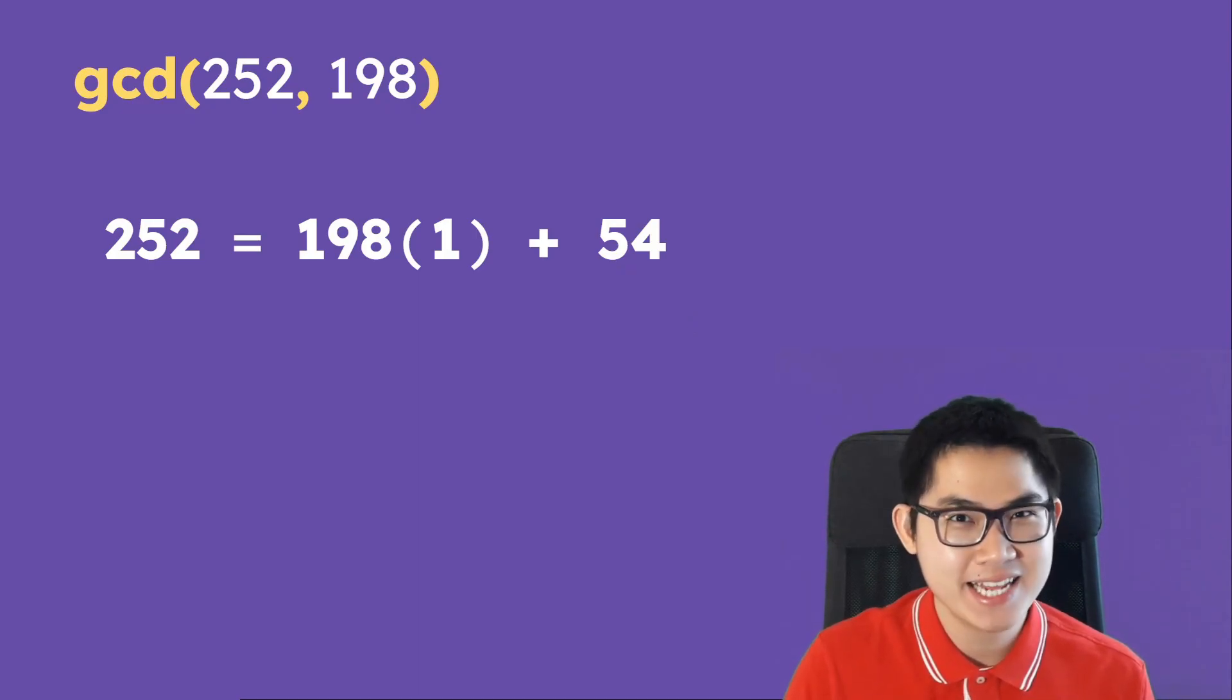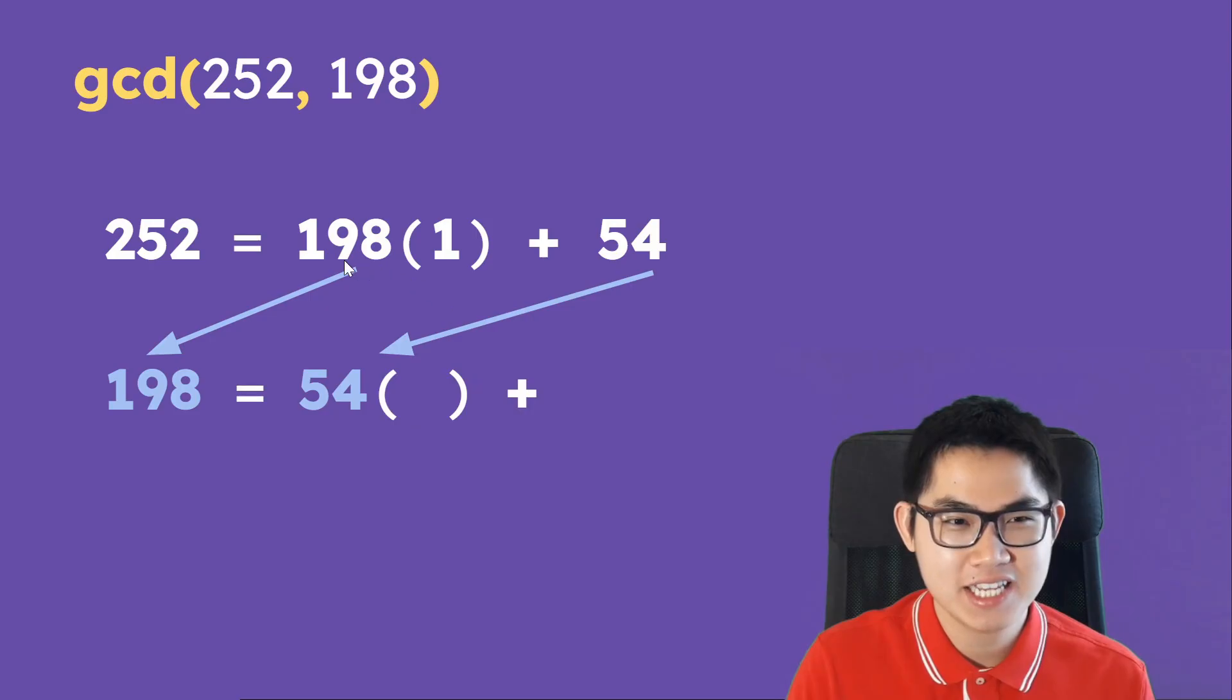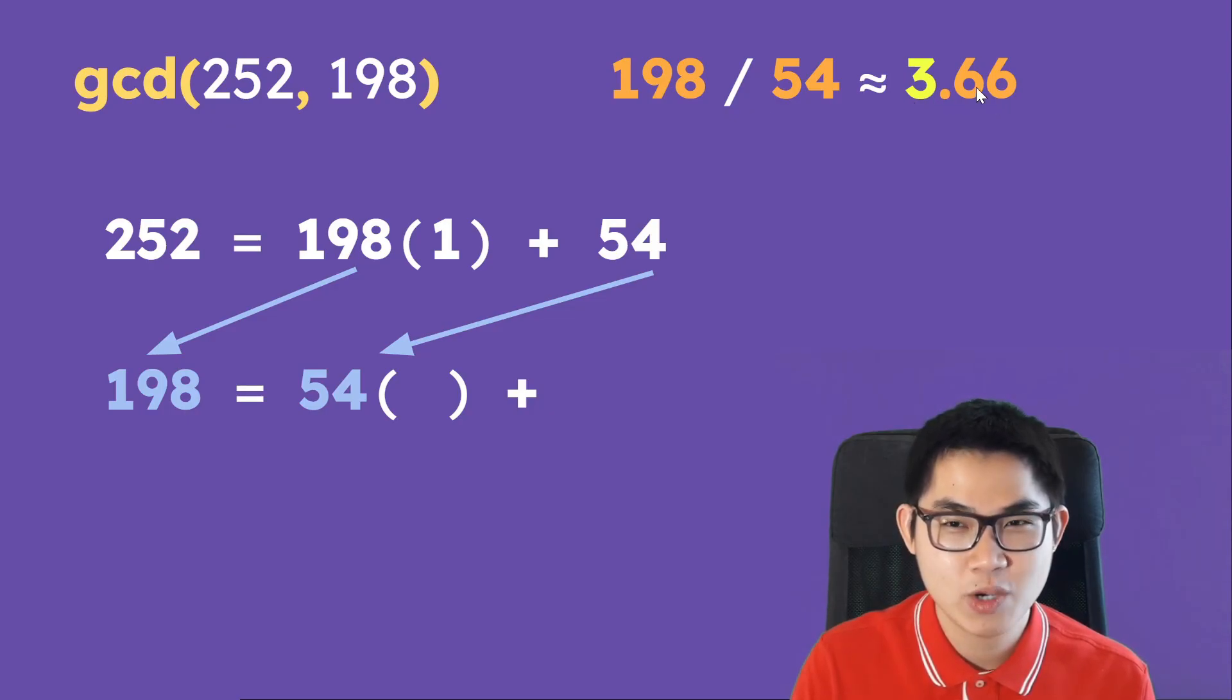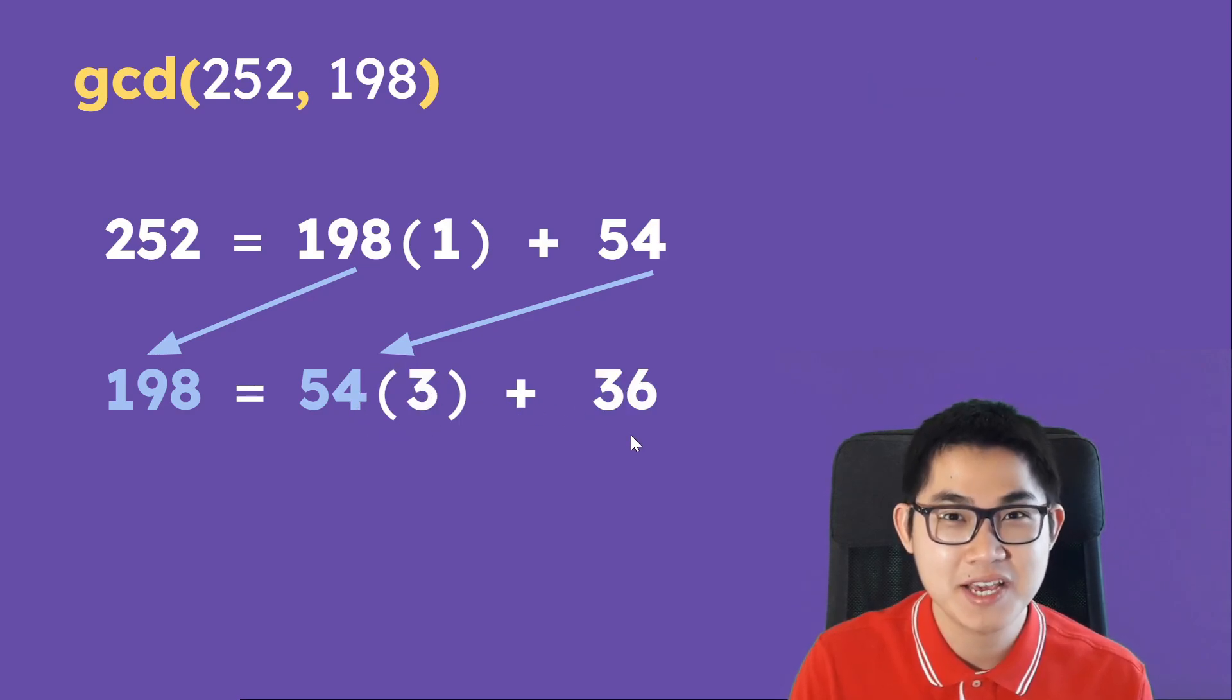We are almost done. We just have to repeat this process. So we bring the 198 down here and the 54 down here and simply repeat the process. Again, 198 divided by 54 gives us approximately 3.66. So we put the number 3 into our brackets, and then we solve for the remainder, which turns out to be 36.